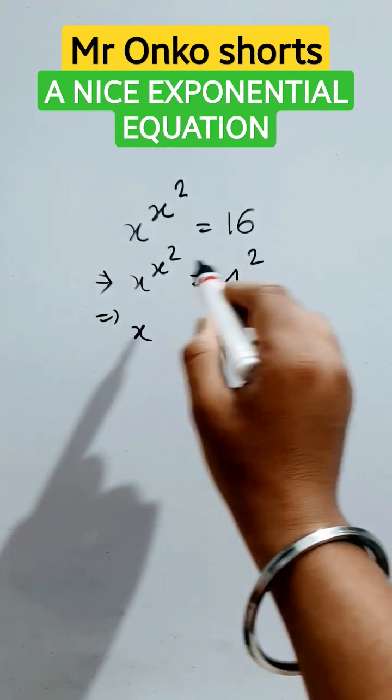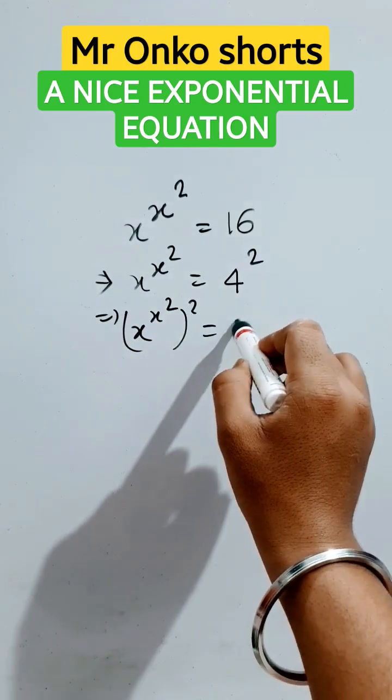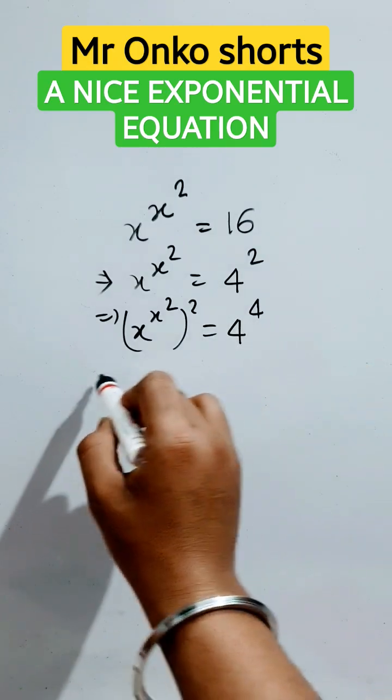Now take whole square on both sides. So it will be x raised to the power x squared whole to the power 2. Here it will be 4 squared squared, that is 4 to the power 4.